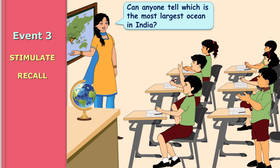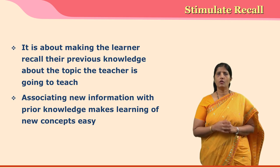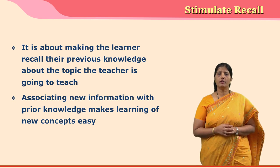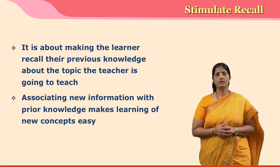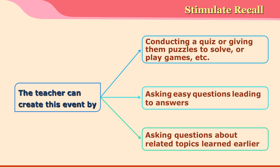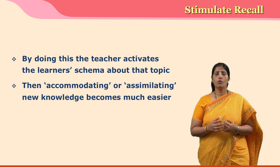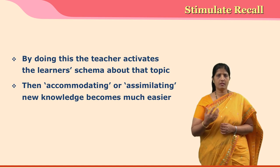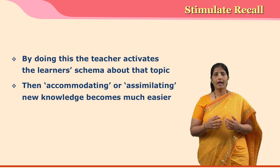The third event is stimulate recall, which means recalling previously learned knowledge. This knowledge needs to be connected to the new knowledge the teacher is going to impart. When previously learned knowledge is brought into the learner's current memory, associating new knowledge with old knowledge becomes very easy. The teacher can create this event by asking questions, administering a quiz, letting them play a game, asking about prior experiences, or having a class discussion. By doing this, the teacher activates the schema in the learner's mind, and once the schema is in active memory, assimilation of new knowledge becomes very easy.